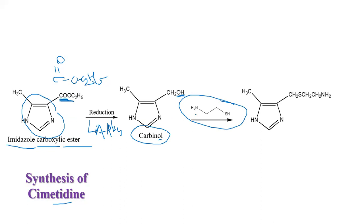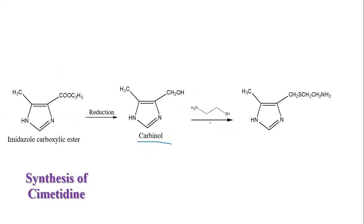In strongly acidic medium, the amino group undergoes protonation, so NH2 becomes NH3+. That's why the maximum nucleophilicity transfers or shifts towards the sulfur moiety or the thiol group. When there is a reaction between this carbinol and this reagent, we get the next structure. The sulfur, being more nucleophilic, attacks the carbon, and the hydroxy group along with hydrogen gets eliminated as a water molecule.